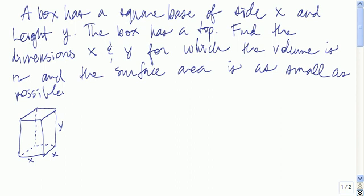Here's an example of an optimization problem. We have a box with a square base of side x and a height of y. The box also has a top and a bottom. We want to find the dimensions x and y for which the volume is 12 and the surface area is as small as possible.